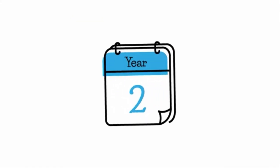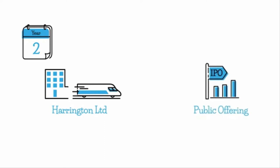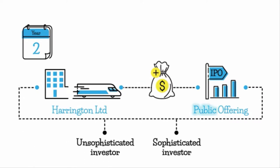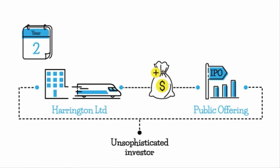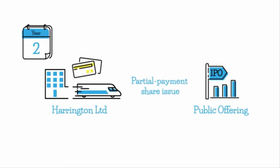Moving along to year two, Harrington Limited has broken ground on the bullet train construction, and the board believes a public offering would provide additional funds. This is a general share issue to the public — unsophisticated investors — so we need to protect them by issuing a prospectus and using the cash trust account, which prevents the company from spending the money unless the share issue is successful.